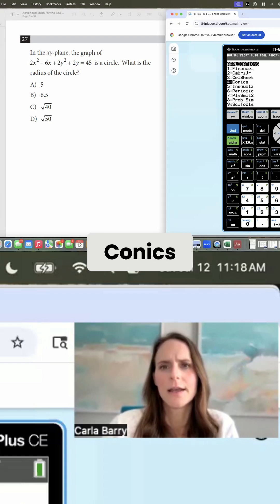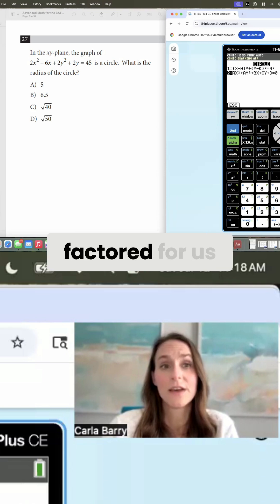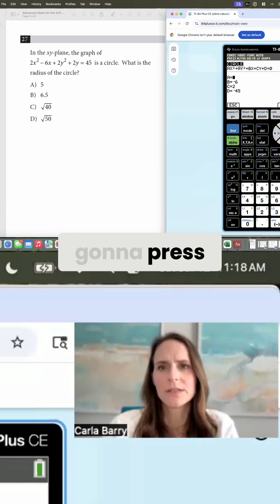In apps, conics, because we see that circle equation there, circles, and we're going to match it to the equation in the calculator. So this is in the second form here because nothing is factored for us. And we're going to press enter. And then we just plug in those numbers.